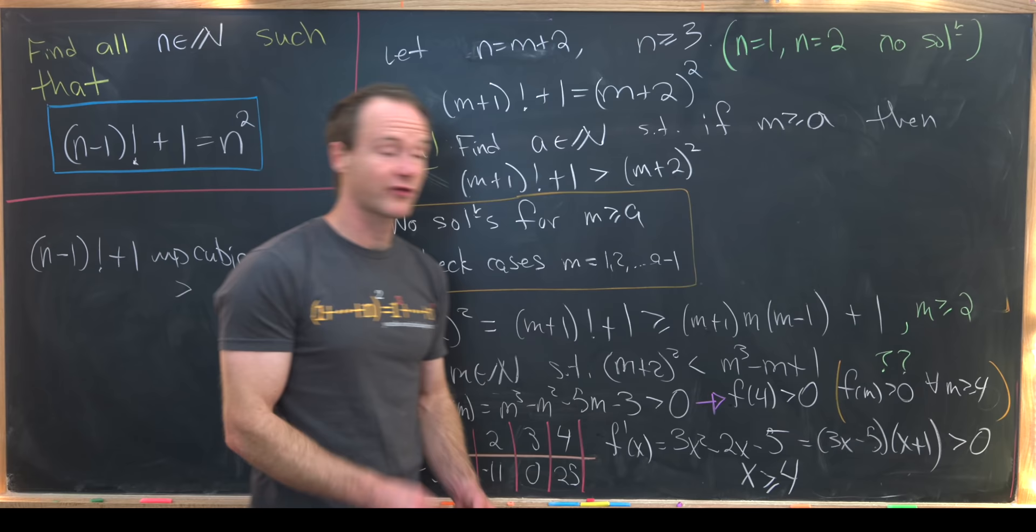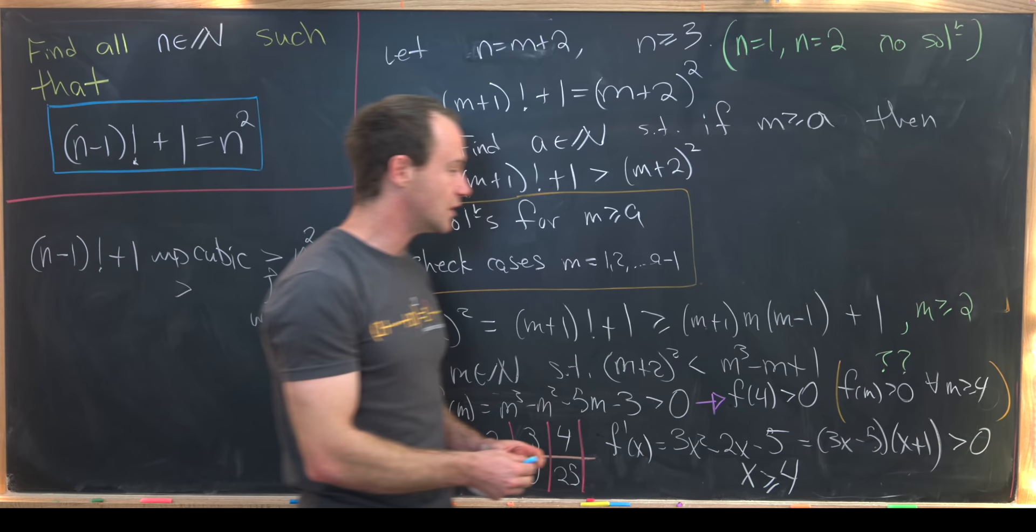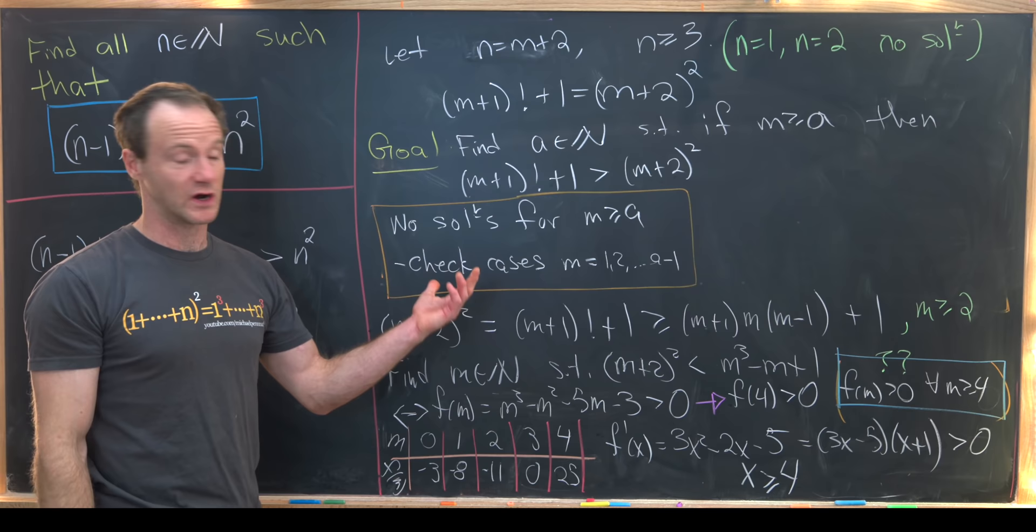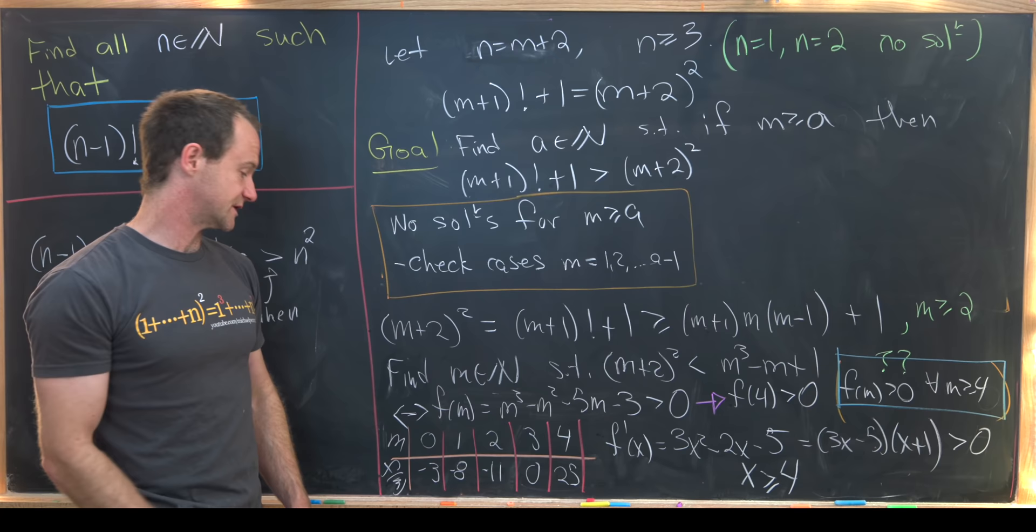So what do we have going on here? We have f of 4 is positive and then we have our function is increasing everywhere past 4. So it's just getting more positive if you will. So putting those two things together we see that in fact yes we have proven that thing with the question marks. f of m is bigger than 0 for all m bigger than or equal to 4.